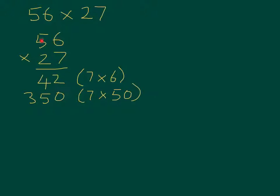I've multiplied 7 by 56, now I need to do 20 times 56, so I've partitioned 56. I'll start with 20, remember not 2, but 20 times 6, which is 120.